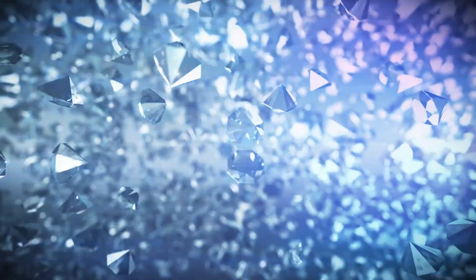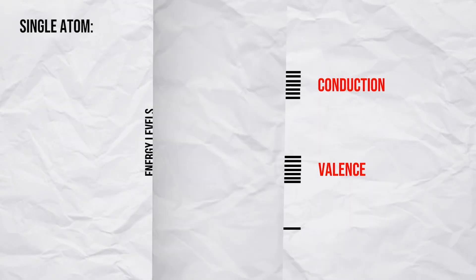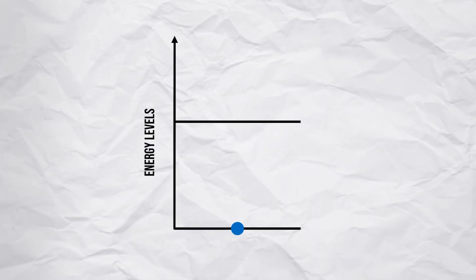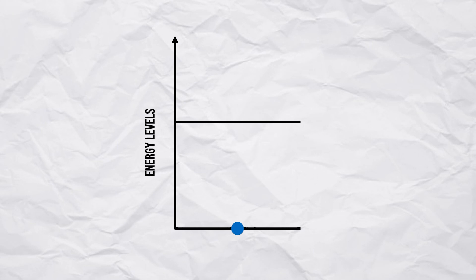I should mention that in solids, which are being discussed for quantum batteries, these energy levels merge together into two bands, called the valence and conduction band. For now though, let's just look at two energy levels for simplicity.